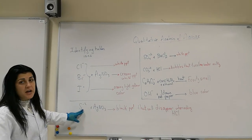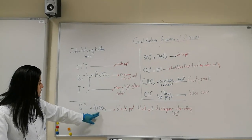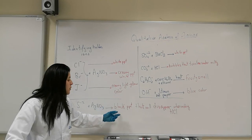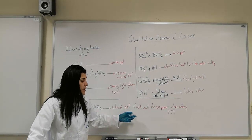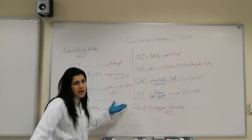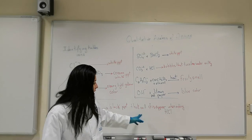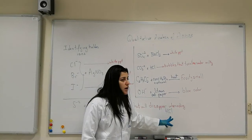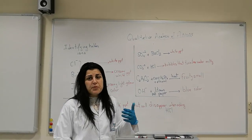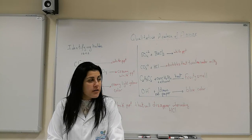For another anion, the sulfide, we are going to add silver nitrate. A black precipitate will be obtained, and this black precipitate will disappear if we add hydrochloric acid to it.